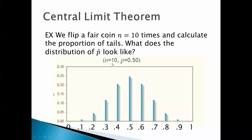Sometimes when you have n equals 10 trials, you might only have two successes or eight successes. Sometimes you'll have a proportion of success equal to 0.1 or 0.9. Now it could even be 0 or 1, but those are so unlikely that you can't even see them above the x-axis. The probability of success is 0.5, but sometimes when you flip the coin 10 times, it doesn't always come up 5 tails. It just doesn't work out that way.